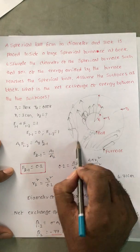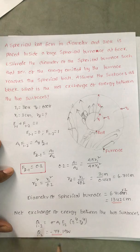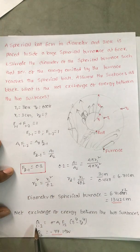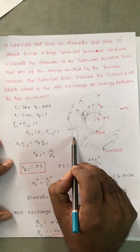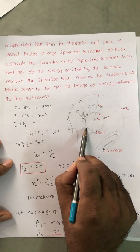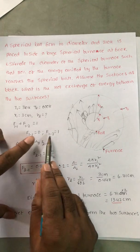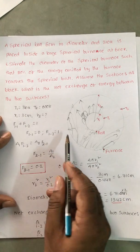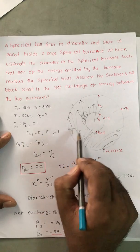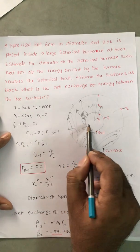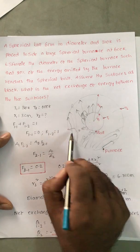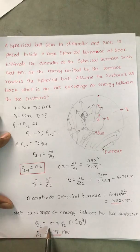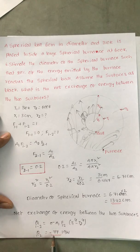For the net exchange of heat in the form of radiation between the two surfaces, we calculate Q12. Heat is actually transferring from the furnace to the ball, but we use F12 = 1. The formula is Q12 = σ · A1 · F12 · (T1⁴ − T2⁴), which gives −77.19 watts.